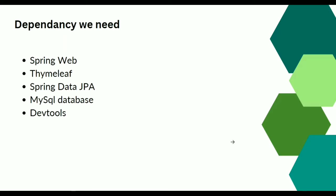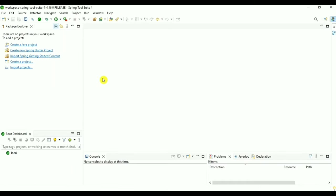Next we have Dev Tools, which is used for automatic restart. Whenever we make some changes it scans the classpath and automatically restarts our application — we don't need to restart manually. It's like the Live Server in Visual Studio. So these are the dependencies we need. Let's start coding. I'm going to use STS — Spring Tool Suite. You can use any other IDE.